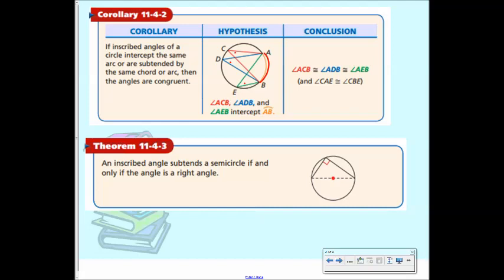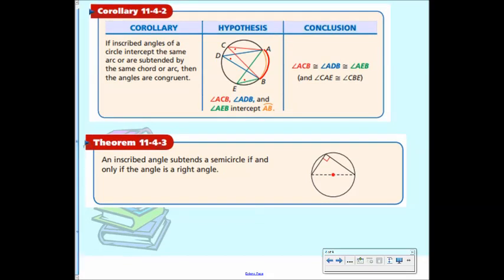An inscribed angle subtends a semicircle, and subtends just means that's the angle it covers, subtends a semicircle if and only if the angle is a right angle. So essentially, what that means is an inscribed angle, how many degrees would this be? 180. So then this angle has to be what? 90, which makes it a right angle. So even if you don't have this marked, if you know that this is a diameter, which you do because it goes through the center, that must be a diameter, therefore this has to be 180, so that angle has to be 90.